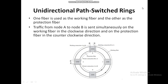Unidirectional path-switched rings are popular topologies for lower-speed local exchange and access networks, particularly where traffic is primarily hubbed from the access node into a hub node in the carrier's central office.